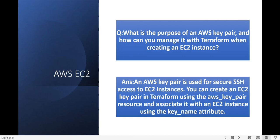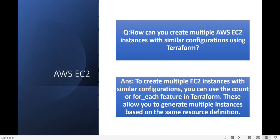The next question is: how can you create multiple AWS EC2 instances with a similar configuration using Terraform? You can create multiple EC2 instances with a similar configuration by using the count or for_each feature in Terraform. This allows you to generate multiple instances with the same configuration.